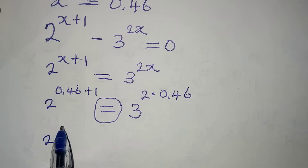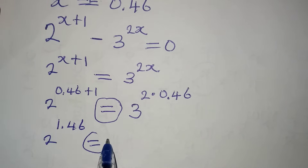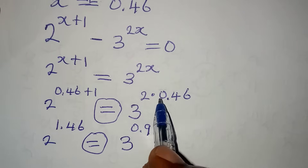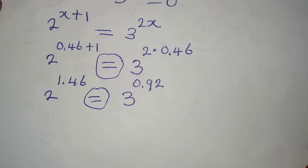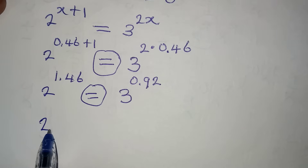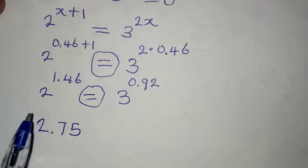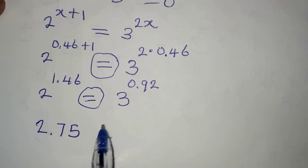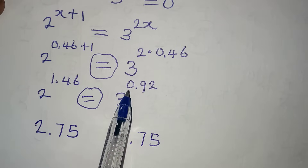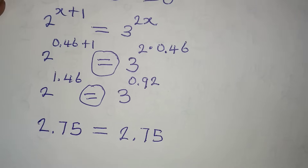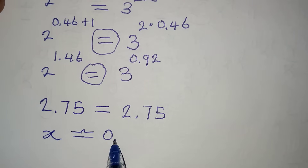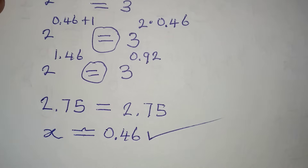This should equal 3 to the power of 0.92, because 2 times 0.46 is 0.92. Pressing the calculator gives approximately 2.75 for 2 to the power of 1.46, and also approximately 2.75 for 3 to the power of 0.92. Therefore they are equal, confirming that x is approximately equal to 0.46 is correct. Thank you for watching.